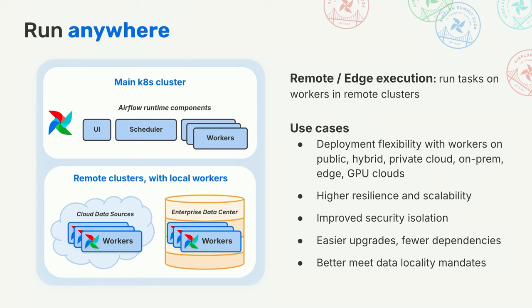A mental model we're using going forward is really splitting Airflow into server and client components, very similar to how you'd think about a web server and web client or browser deployments. Task isolation is described in a lot more detail as part of AIP72, which is the foundation for this. There's also a tremendous amount of work being done by Jens as part of edge execution, which is one of the key things enabling the run anywhere capabilities that will be part of Airflow 3.